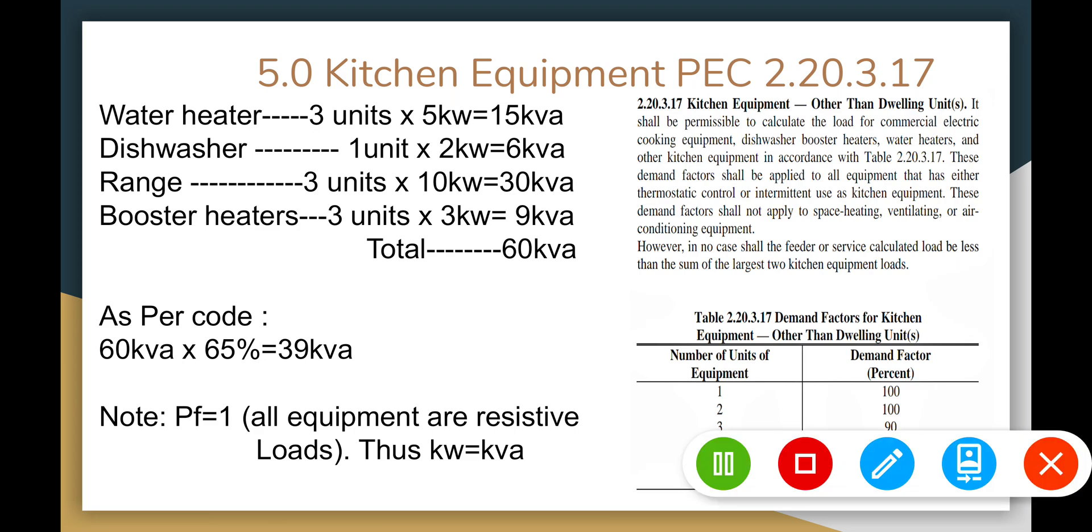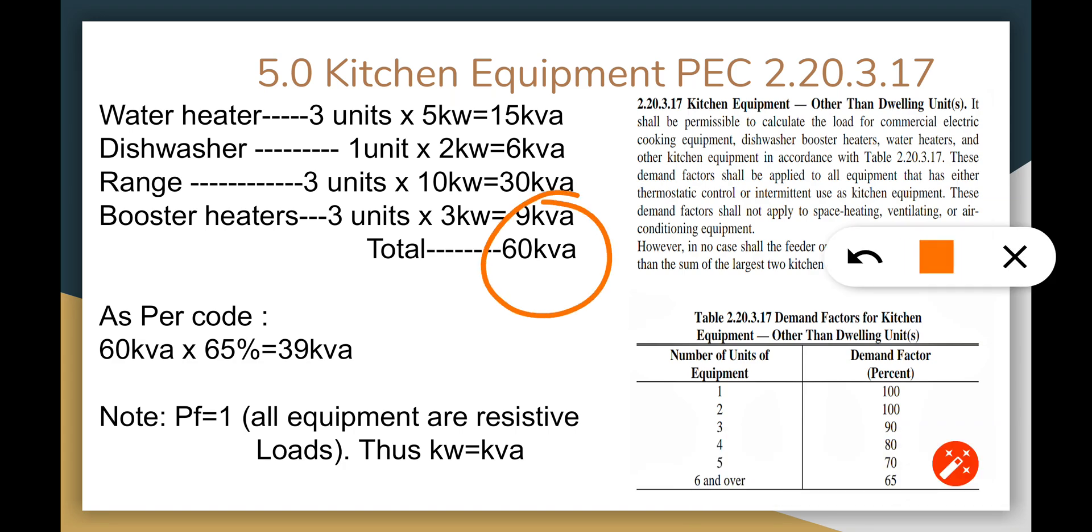For the kitchen equipment, we have a total of 60 kVA. The power factor is one because these are heaters, all resistive loads, so one kilowatt is equal to one kVA. We have more than six units of appliances, so we use 65 percent based on the code, so we get 39 kVA.